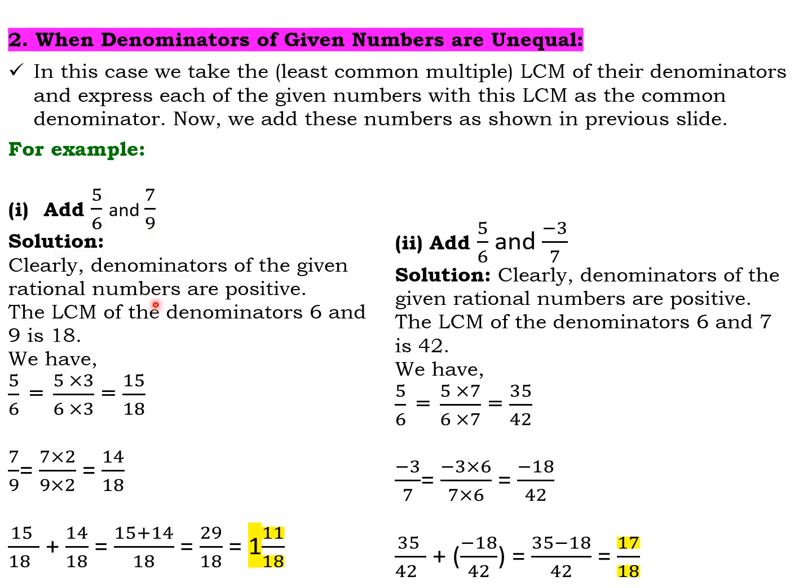Look at one example. Add 5/6 and 7/9. Clearly the denominators are different and they are positive. The LCM of 6 and 9 is 18. So 5/6, you have to change 6 to 18. 6 into 3 will give you 18, so multiply 3 in the numerator also. The number 5/6 will become 15/18. Same way 7/9 will become 14/18. Now here we are multiplying with 2 up and 2 down so the denominator becomes 18. Adding both of them, we got 29/18. Its mixed form is 1 whole 11/18.